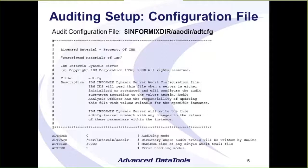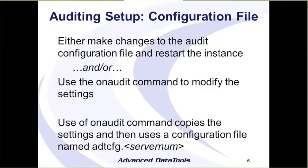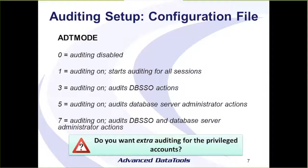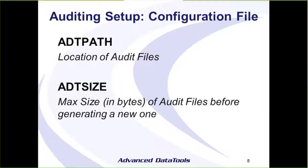Going through these values: ADT_MODE is really whether auditing is on or off — zero is off. Setting it to one starts auditing. If you want your database administrator or database security officer to have additional auditing enabled, you can change the value of ADT_MODE. ADT_PATH is simply where you want the audit files — those text files — to be stored.